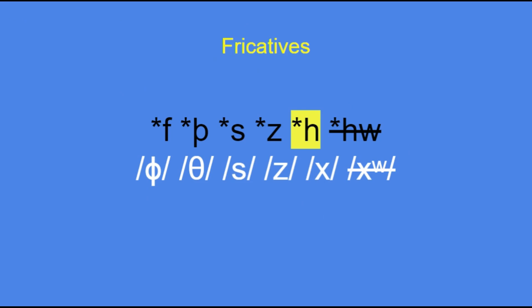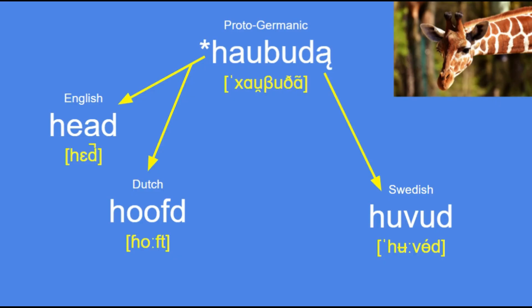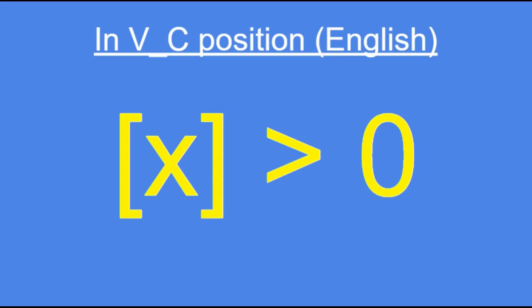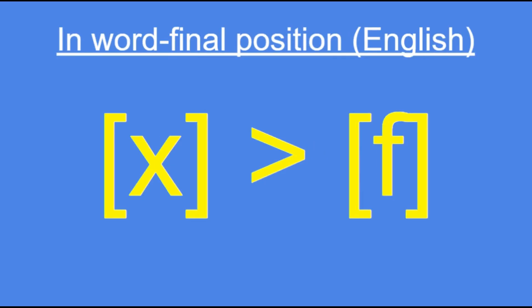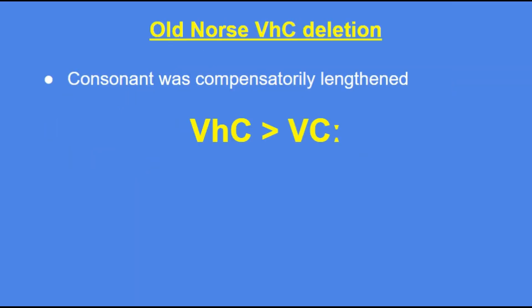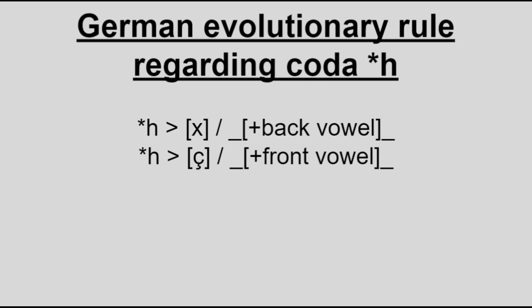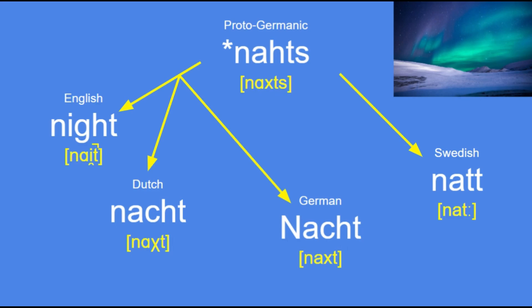The velar fricative x did its own thing. It softened to h at the beginnings of words — for example, Proto-Germanic *hauzijan became Swedish höra, Dutch horen, and English hear. But in coda position it stayed x for a while longer, then split in several directions. In English, it disappeared and compensatorily lengthened the vowel before it, unless it ended the word, in which case it became f (like in laugh — hence the weird spelling). In the North Germanic languages it also disappeared but compensatorily lengthened the consonant after it. In Dutch and Yiddish it hardened to x, while in German it either stayed x or became another variant, depending on the surrounding vowels. For example, Proto-Germanic *naxt became Swedish natt, German Nacht, Dutch nacht, and English night.